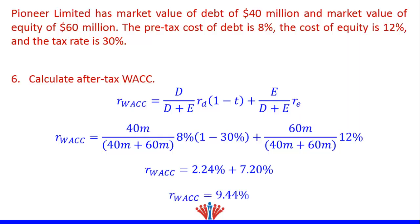After-tax WACC is always lower than pre-tax WACC because after-tax WACC uses after-tax cost of debt, which is always lower than pre-tax cost of debt. After-tax WACC has the same formula as pre-tax WACC except that the cost of debt is multiplied by (1 minus tax rate), resulting in a lower value. After-tax WACC will equal pre-tax WACC only if the tax rate is 0%.